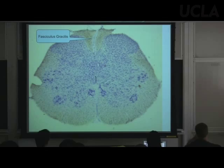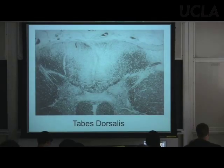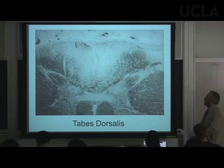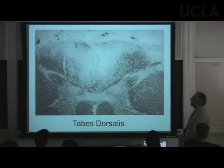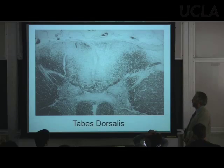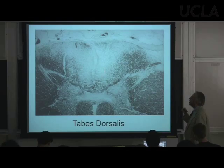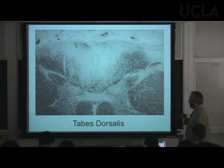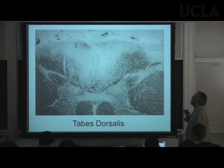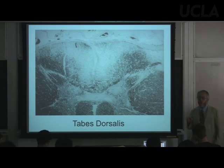These dorsal column axons carry proprioceptive and kinesthetic information. There is a disease — tabes dorsalis — that attacks and kills these axons.